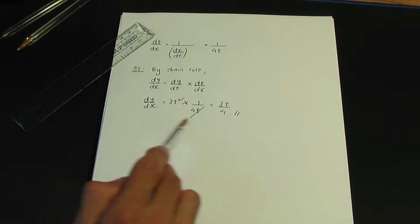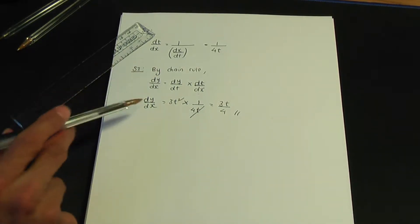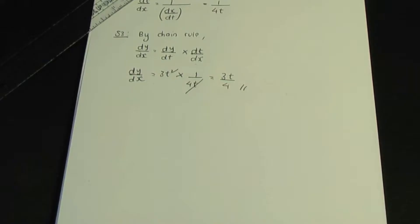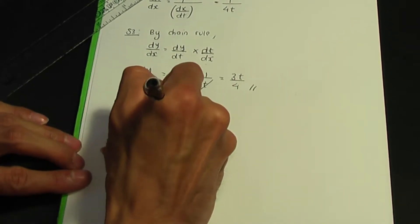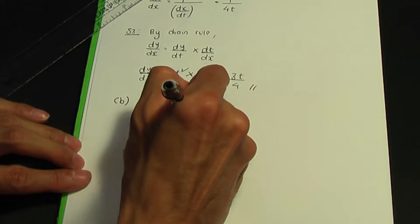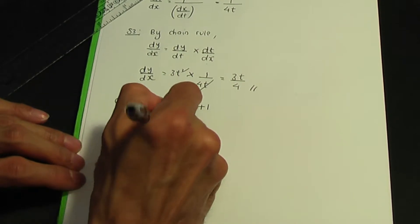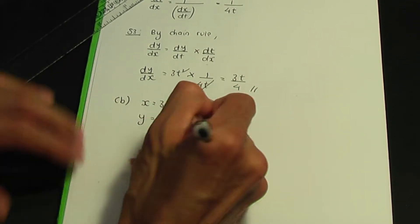So those are the steps to work out dy over dx given parametric equations using the chain rule. Let's try part b: x equals 3t squared plus 4t plus 1, and y equals t cubed plus t squared.